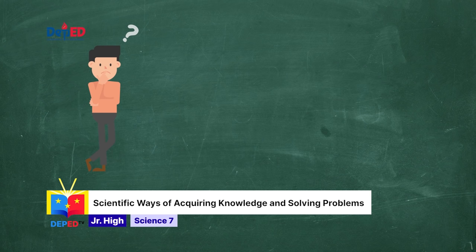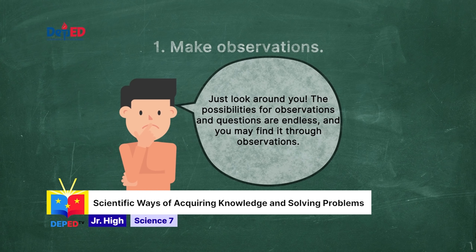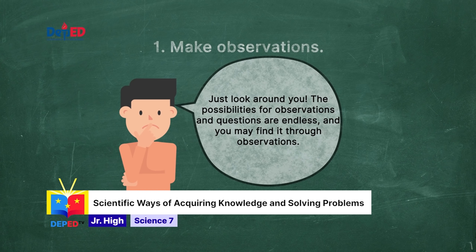When using the scientific method, the first thing you need to do is to make observations. Just look around you — the possibilities for observations and questions are endless. After observation, you may come up with a question. The next step is to develop a hypothesis, which is an educated guess. Next is to conduct an experiment to test the hypothesis. After your experiment, make sure to record the observations and data so you can analyze the results. Finally, you need to draw conclusions to summarize the findings and see if your hypothesis is accepted or rejected.